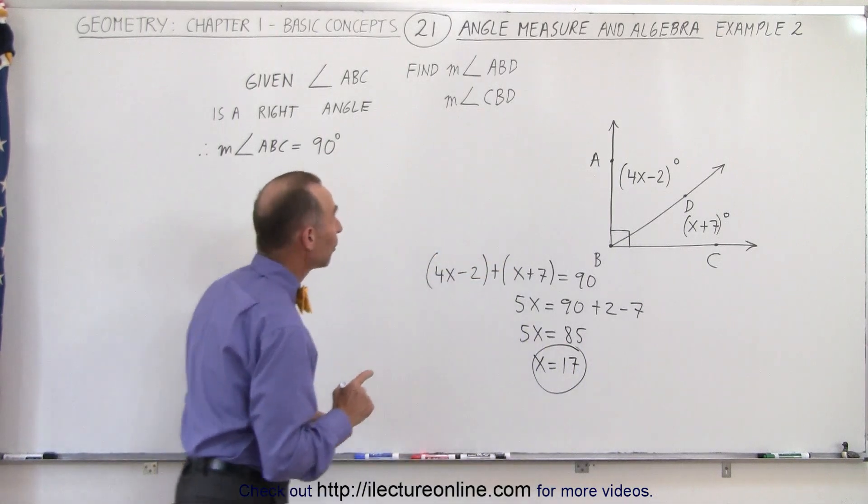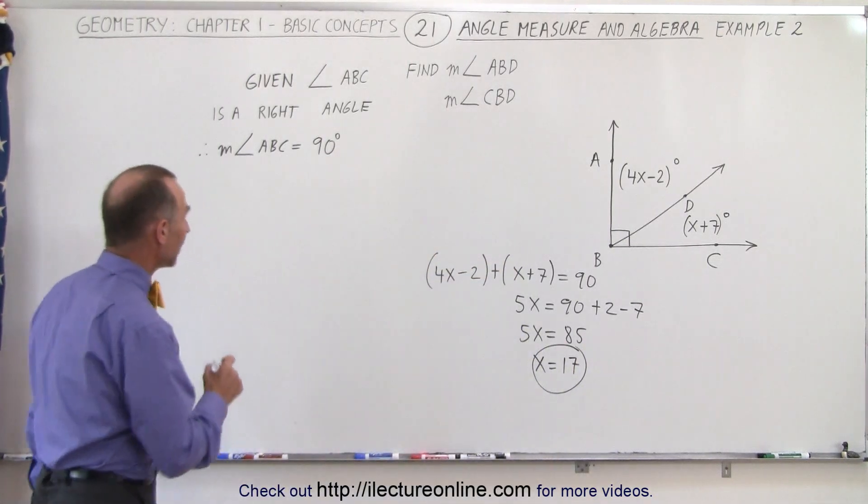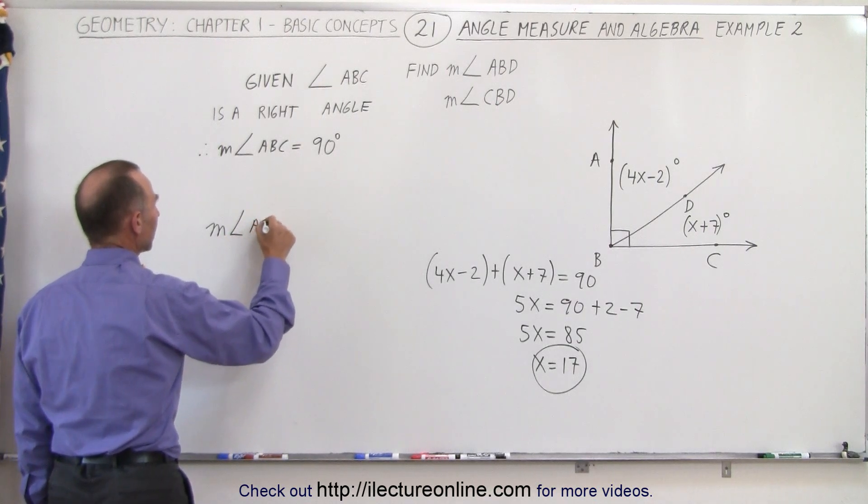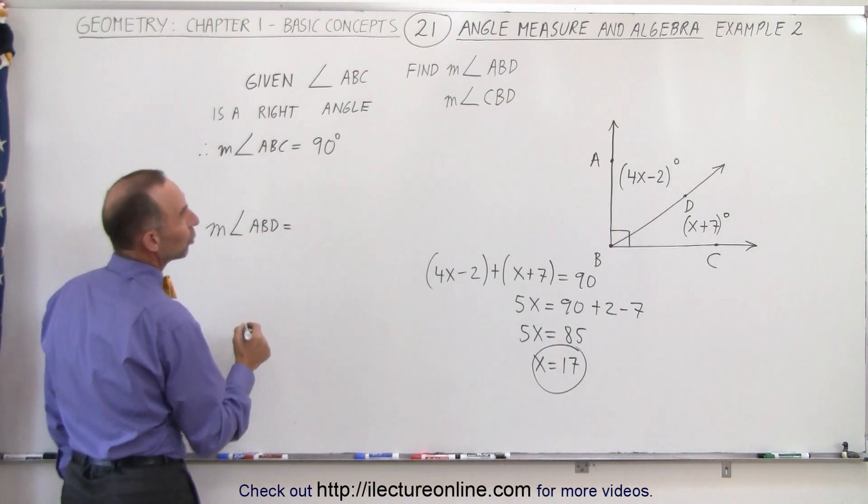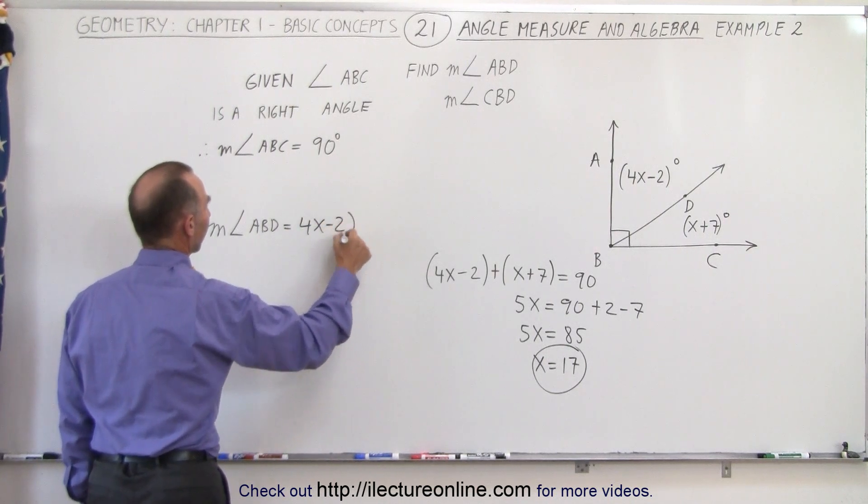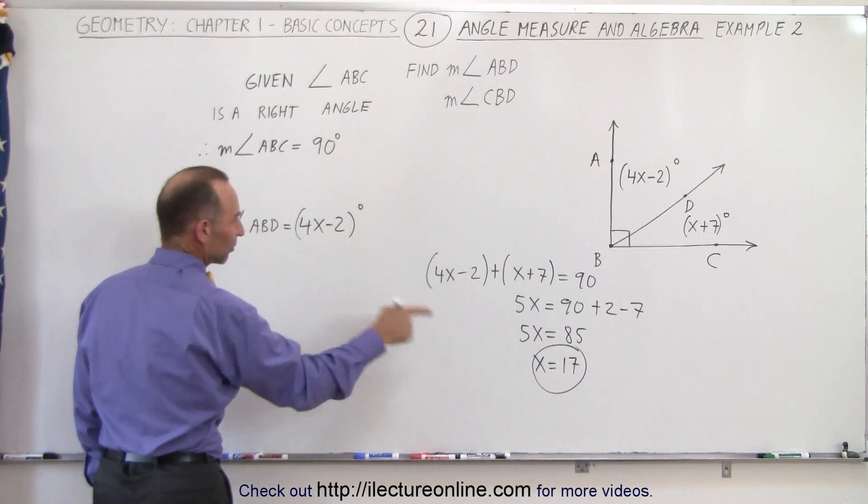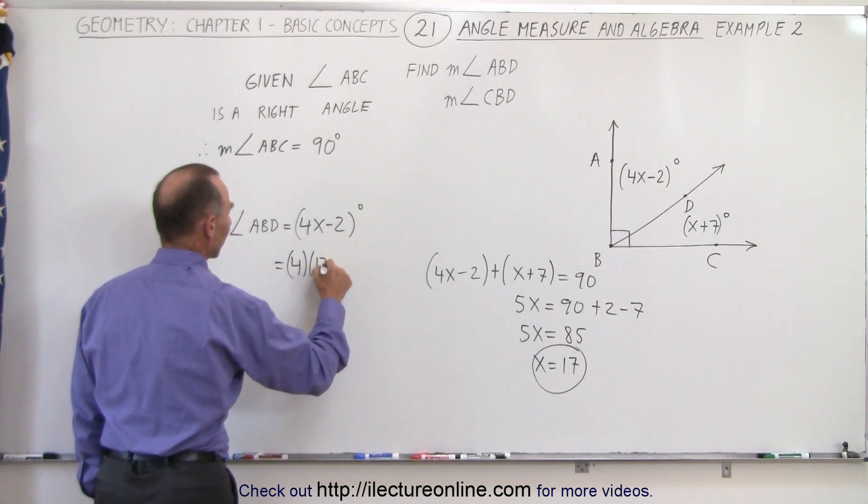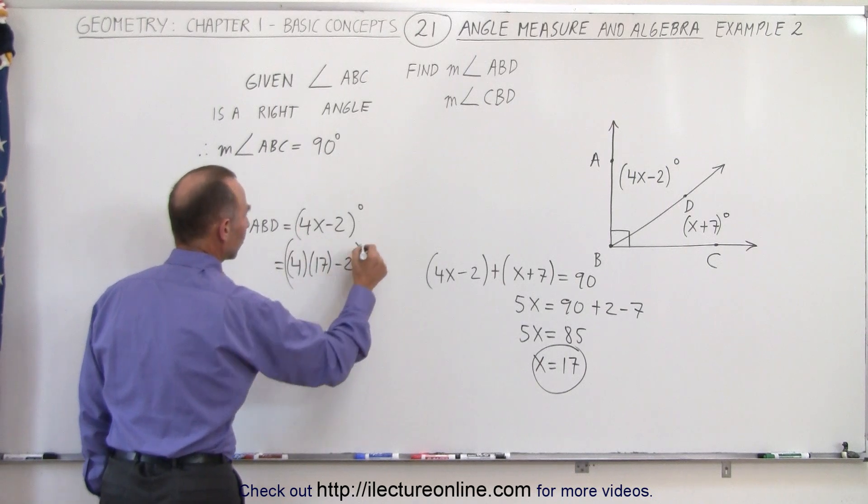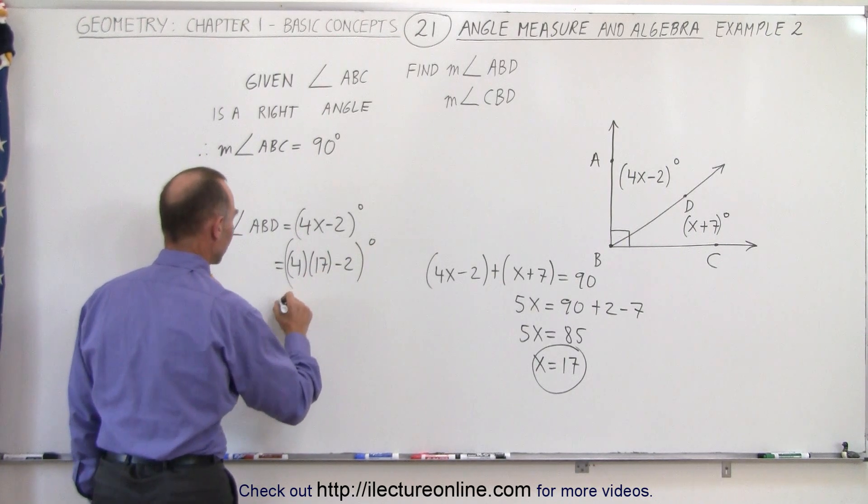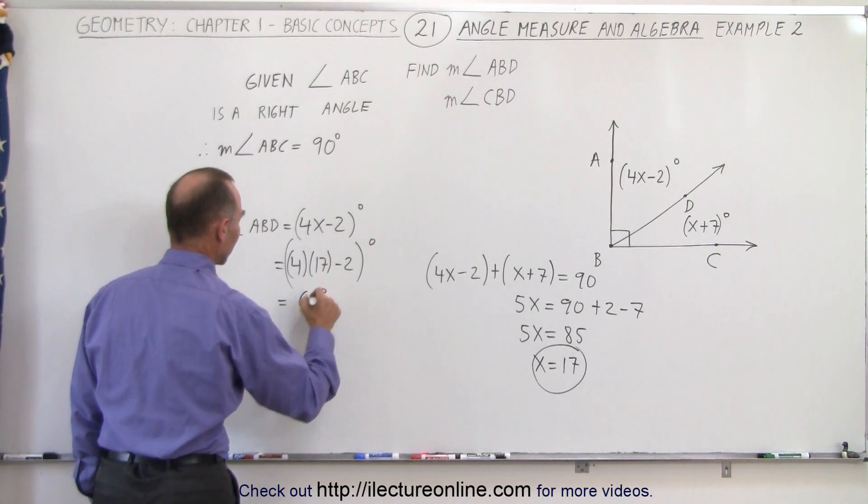Now given that, we can find the measure of angle ABD. The measure of angle ABD is equal to 4x minus 2 degrees. Since x equals 17, that is 4 times 17, which is 68, minus 2, which equals 66 degrees.